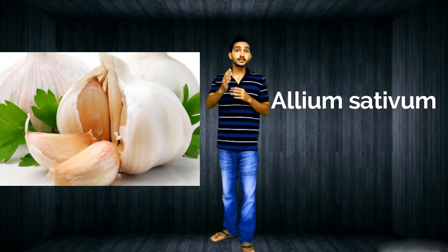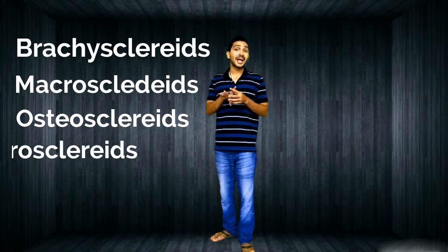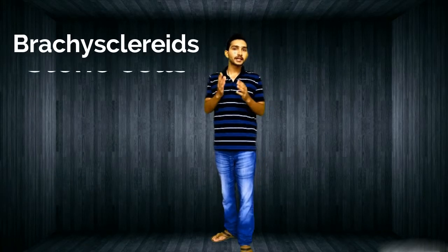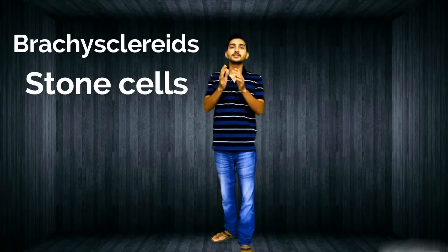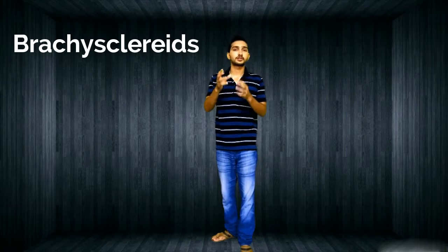Now, sclerids are classified into five types: brachysclerids, macrosclerids, osteosclerids, astrosclerids, and trichosclerids. Now let's discuss brachysclerids. Brachy means stone cells — these are isodiametric in shape and show similarity with parenchyma cells. We can mainly see them in the cortex and in the fleshy parts of fruit.